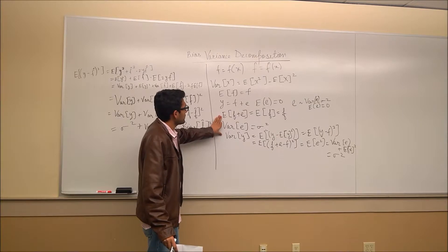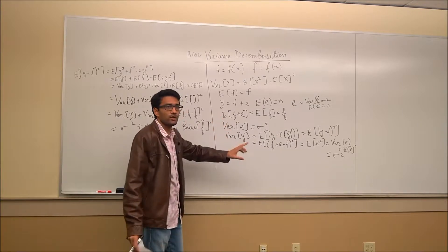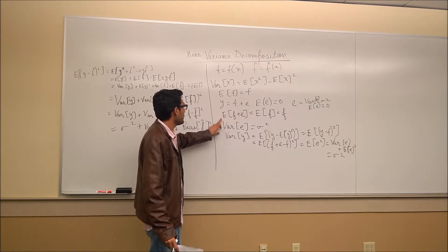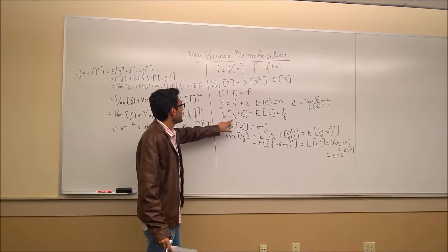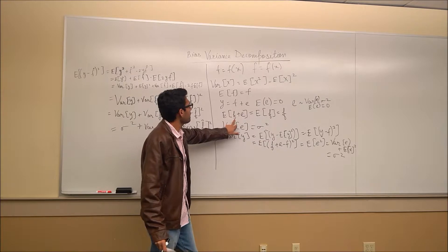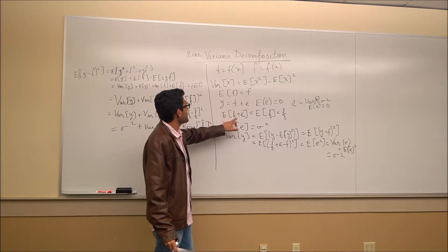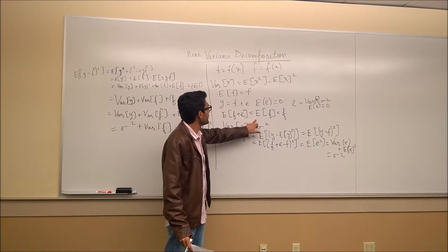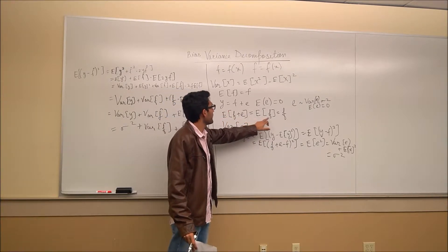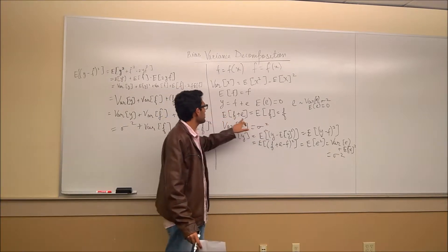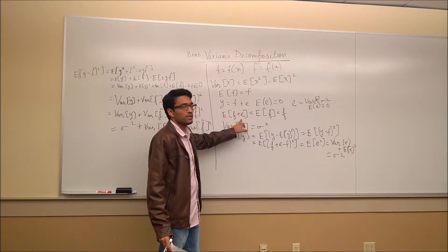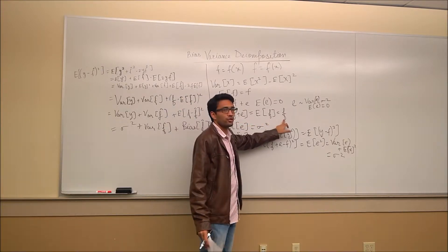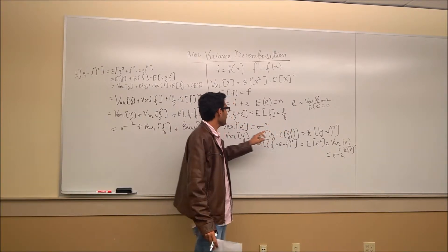Now let's establish a smaller result we'll use in the bigger derivation. The expectation of y, which is f plus e, equals the expectation of f, because the expectation of e is 0, and we know the expectation of f is just f.